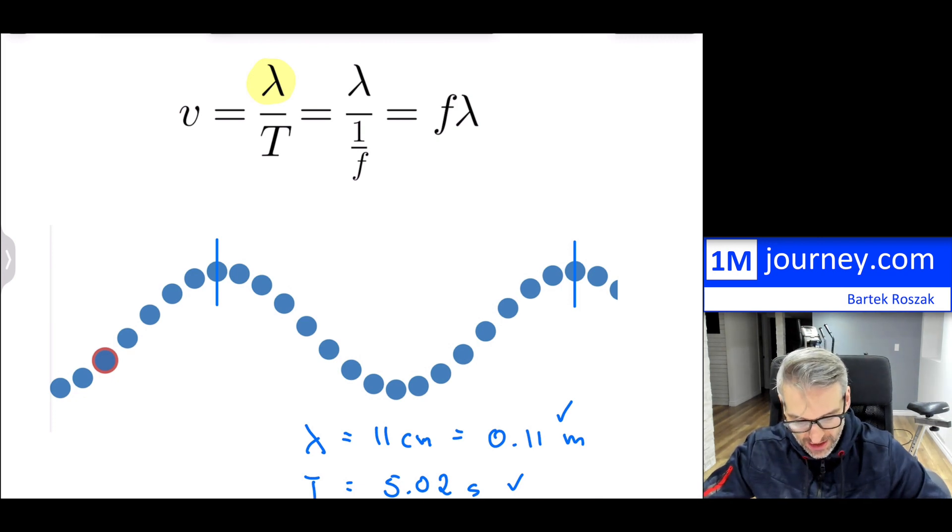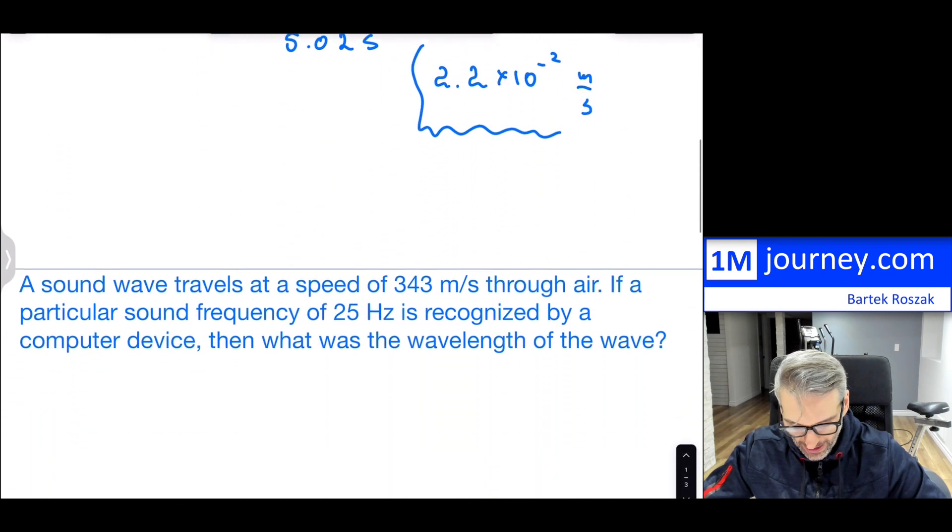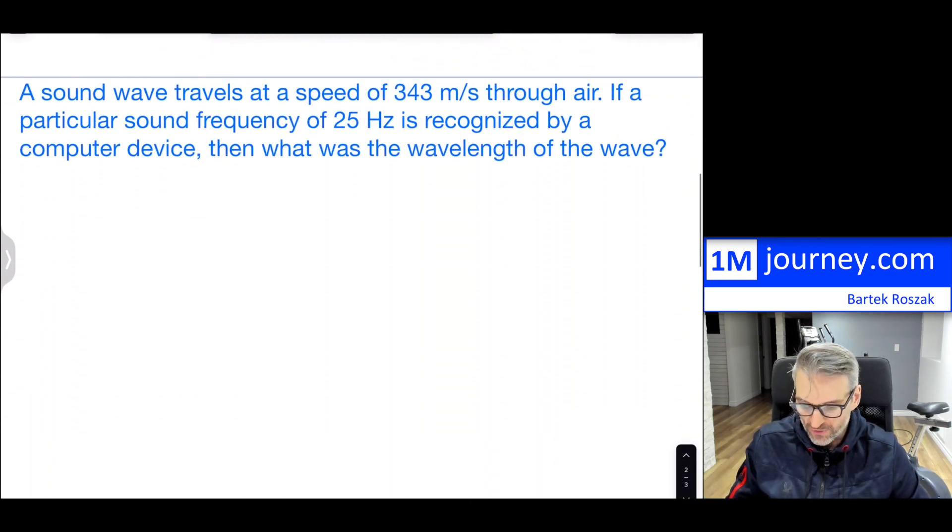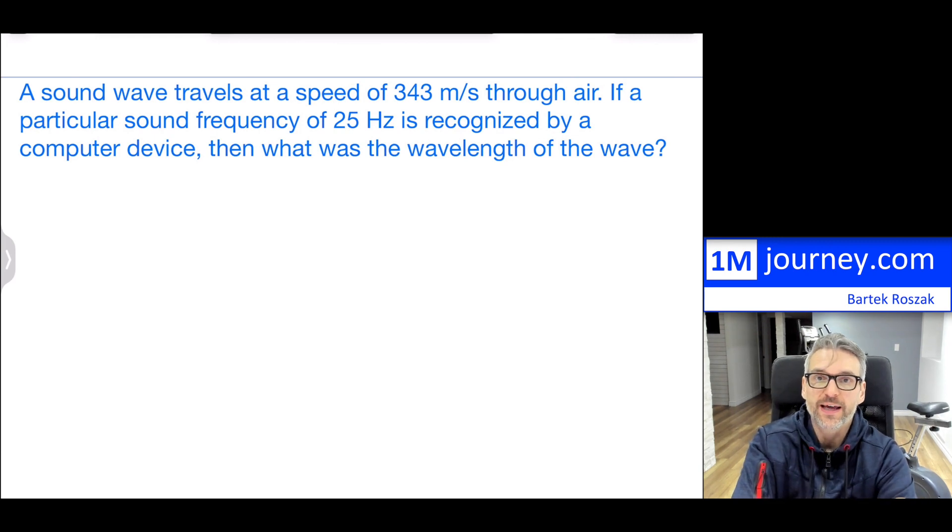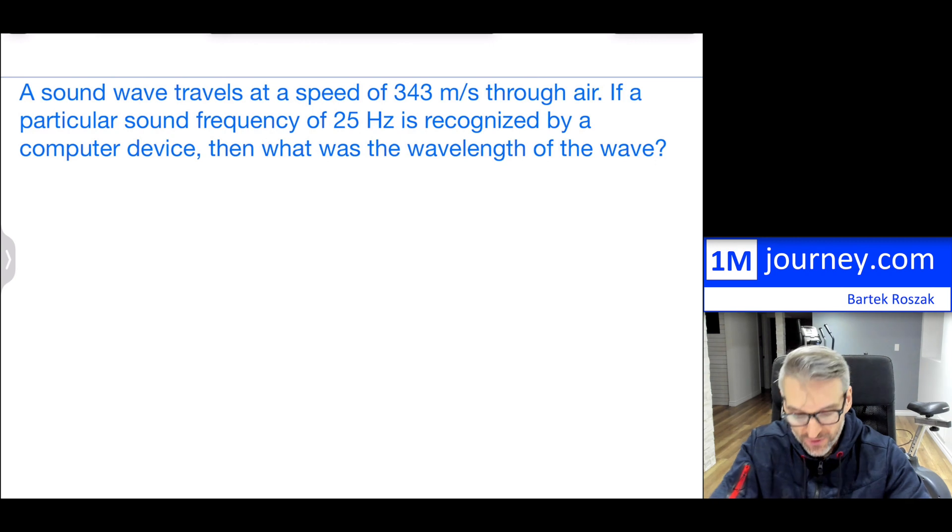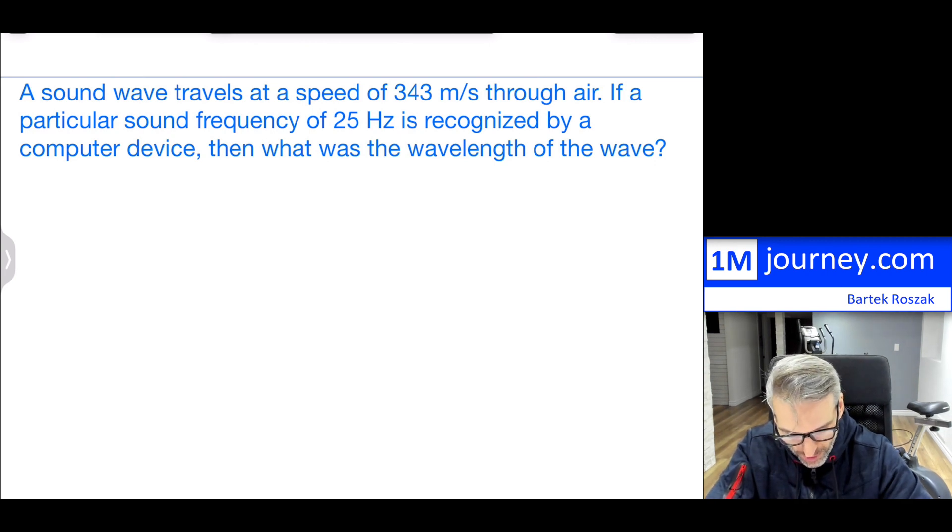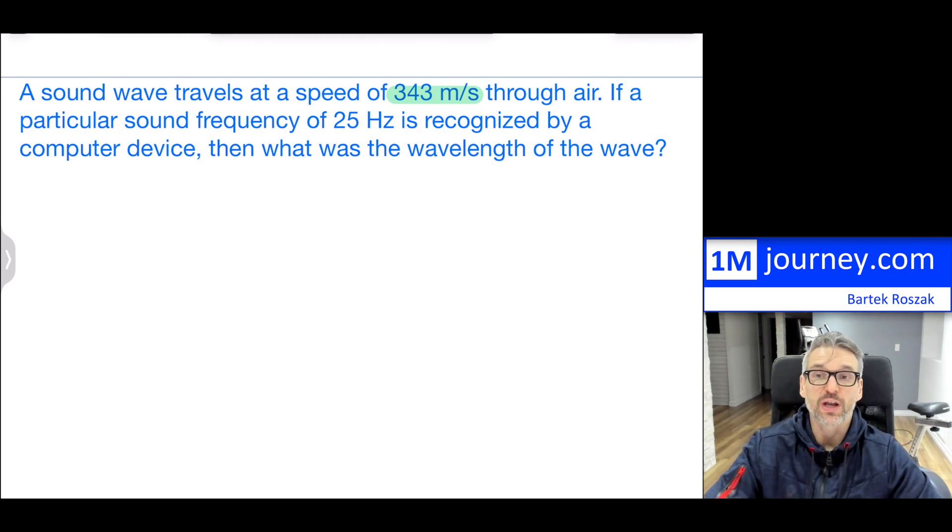So now I can use these, not just kind of in these experimental ways, but I can use it. Let's take a look at some of these examples in here so that we can apply the formula itself. So here it gives us a sound wave. It tells us that this sound wave is traveling at approximately 343 meters per second. That's more or less what the sound travels through air.